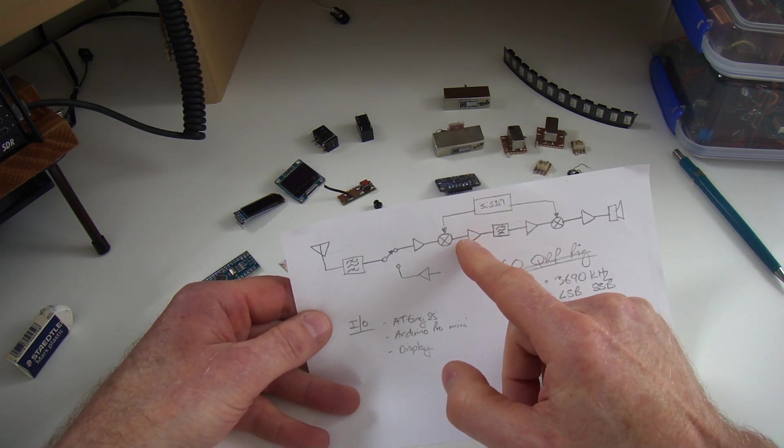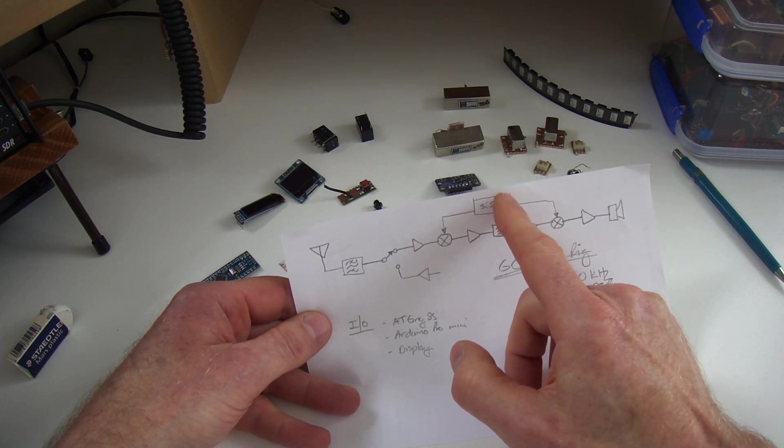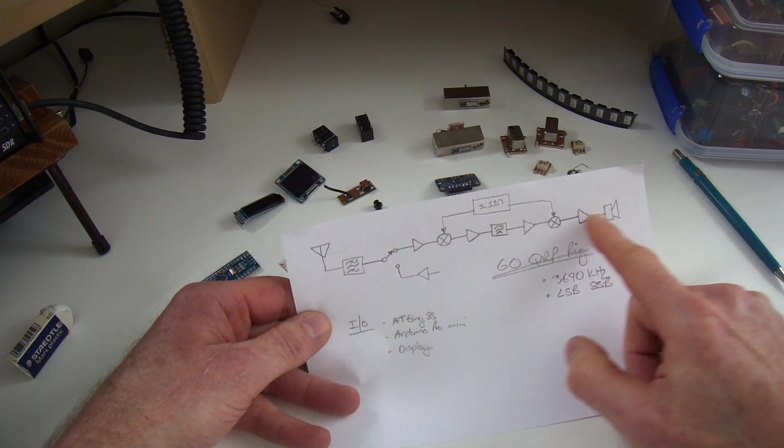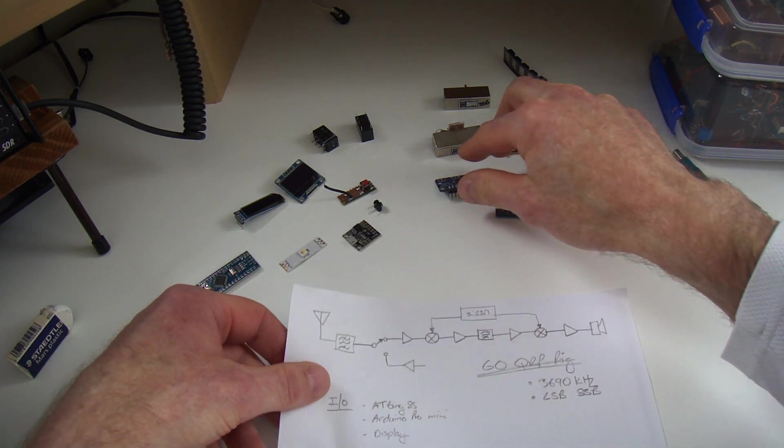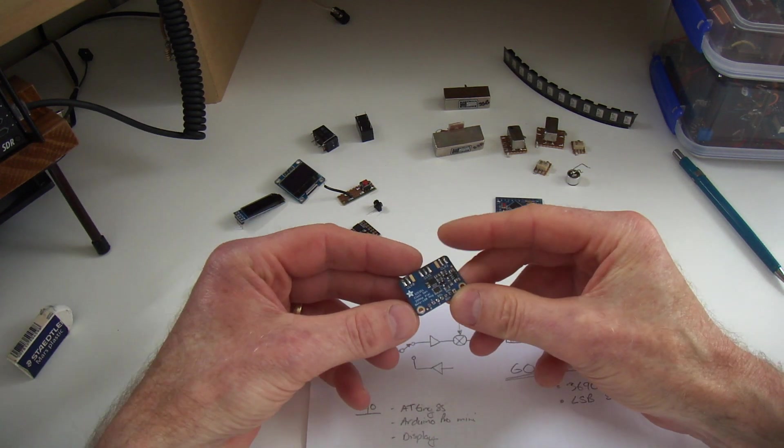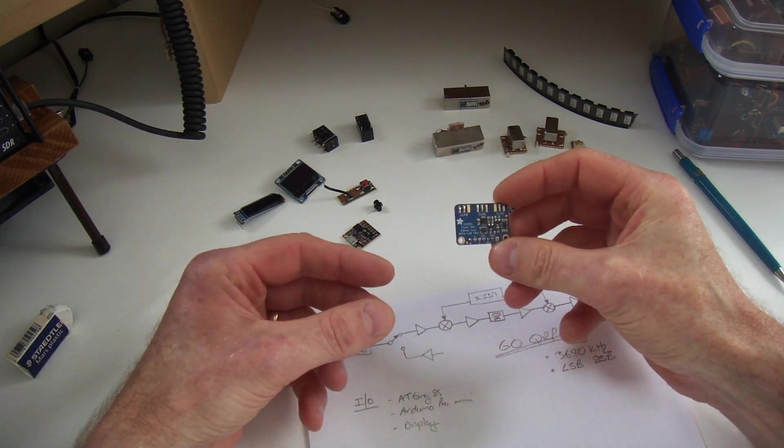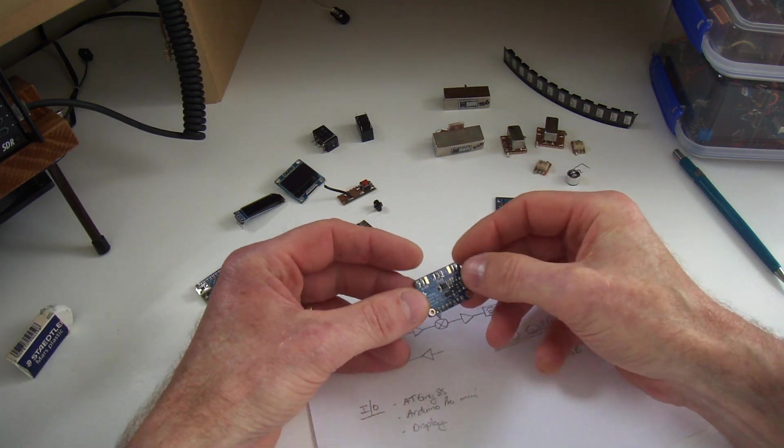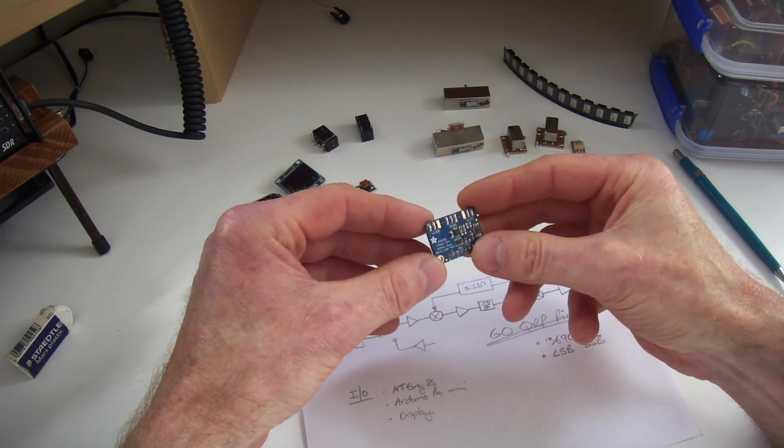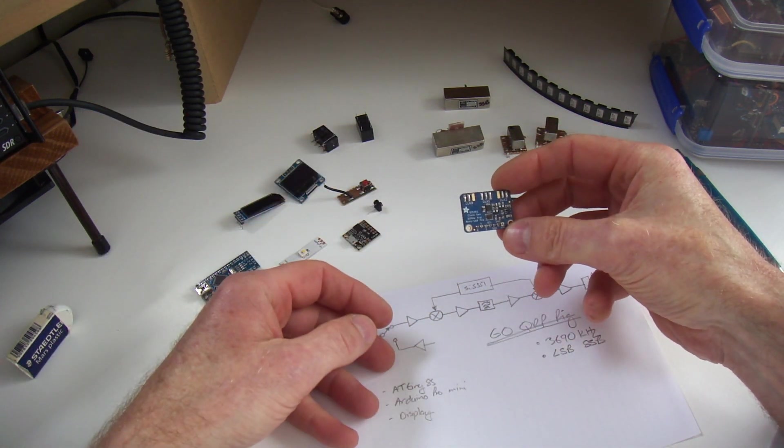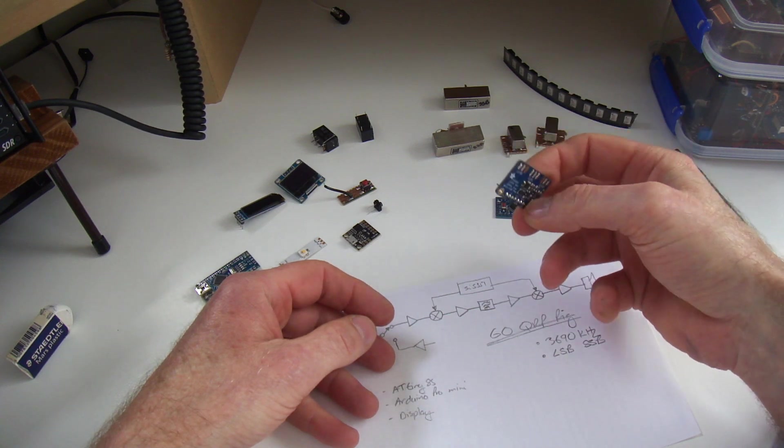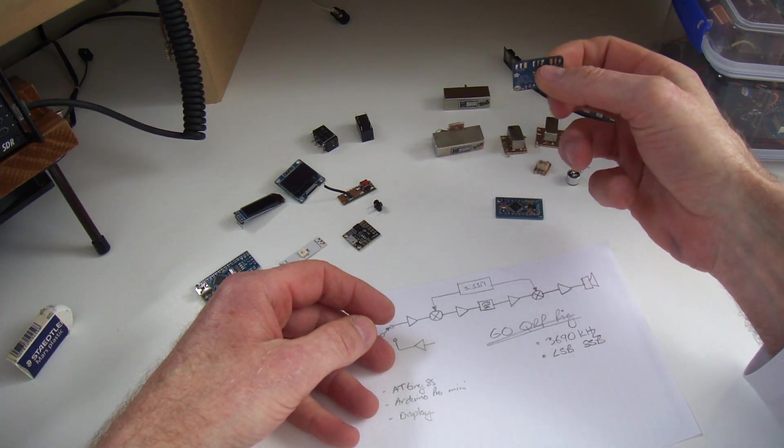What I'm thinking about in terms of I/O is once again using the SI5351 as the variable frequency oscillator and the beat frequency oscillator on receive. It works for me, it's not for everybody, but that's what I'm going to use.